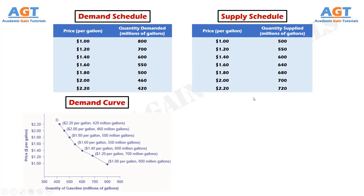The Demand Curve is a graphical representation of the relationship between price and quantity demanded of a certain good or service, with quantity on the horizontal axis and the price on the vertical axis. This is a Demand Curve plotted from the data from the Demand Schedule, with demand quantity of gasoline on the horizontal axis and the price per gallon of gasoline along the vertical axis.